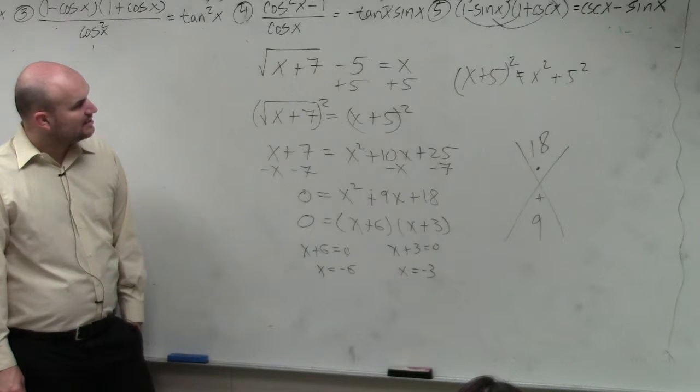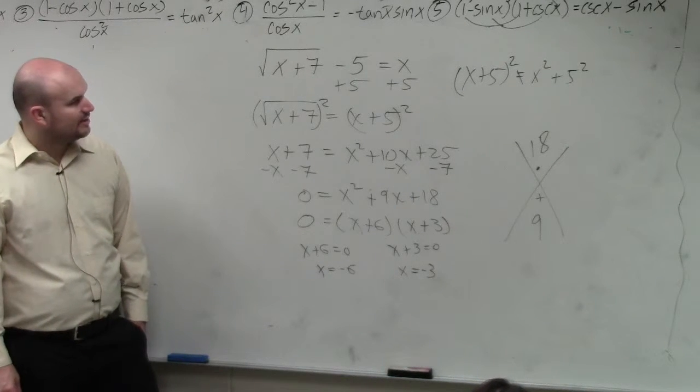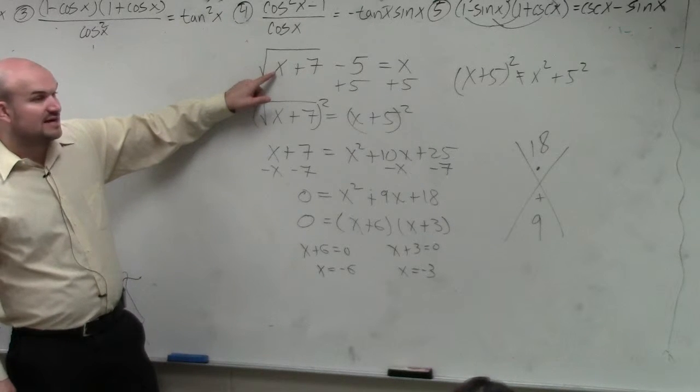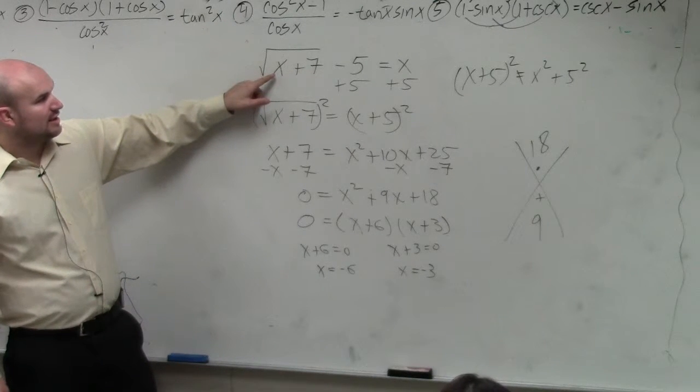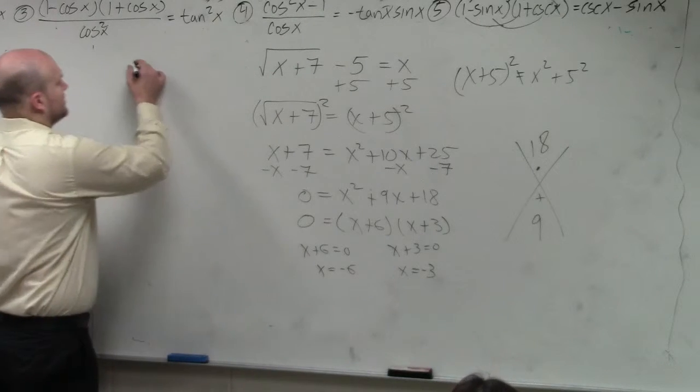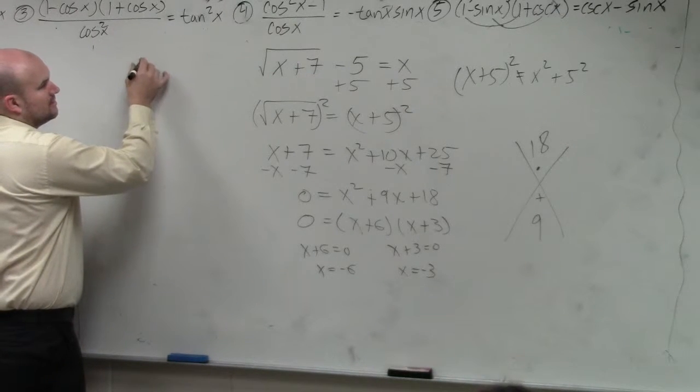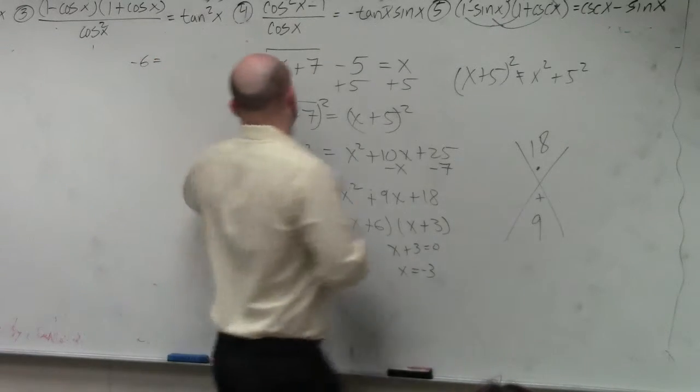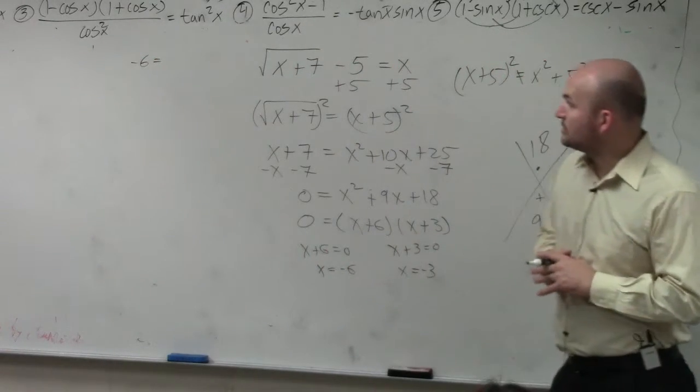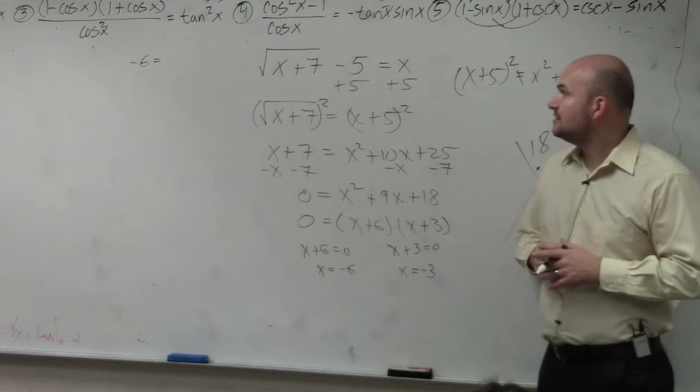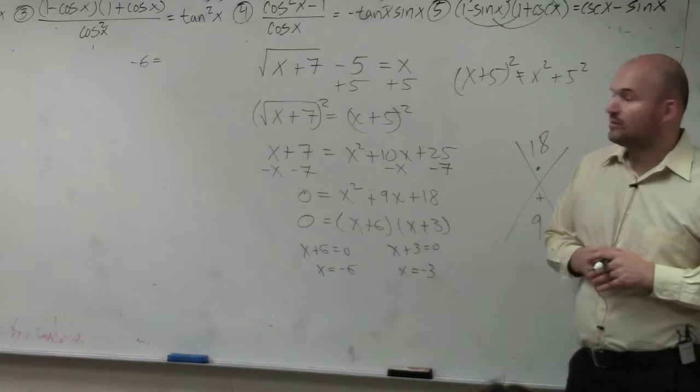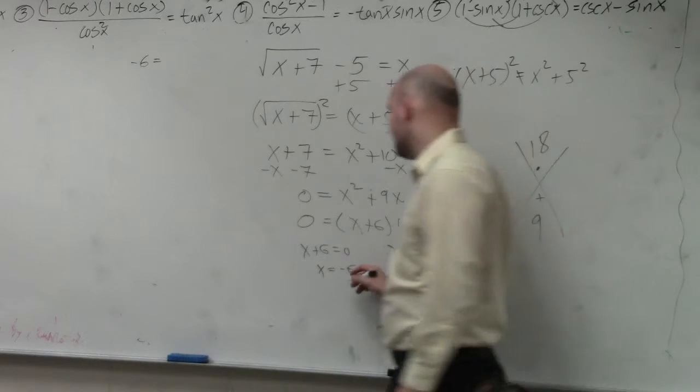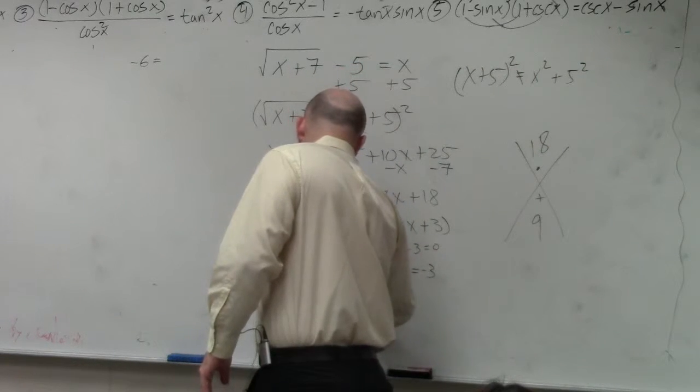So let's go through this and see what we get. So when we go ahead and check our answers, we have negative 6. Negative 6 plus 7 is 1. Square root of 1 is 1. So that's x equals negative 6. Negative 6 plus 7 is 1. Square root of 1 is 1. 1 minus 5. 1 minus 5 is negative 4. Does negative 4 equal negative 6? No. So this one doesn't work. Or it's what we call extraneous.